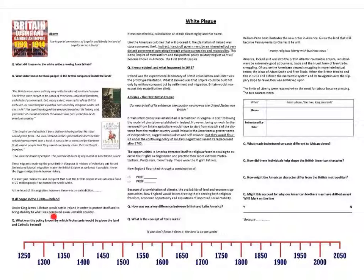Starting off with the idea of plantations in Ireland and going through to how that was then exported on a grander scale to America. But this was the first British Empire — the mercantile empire, the empire of salutary neglect. Certain individuals, the type of person that moved to America, would bring with them and develop a certain character and certain qualities that would mean that when Britain ends salutary neglect in 1763, there are going to be problems.